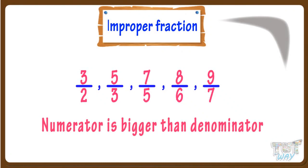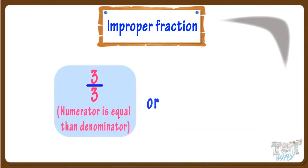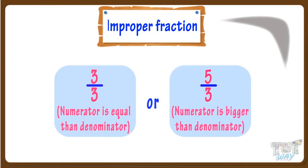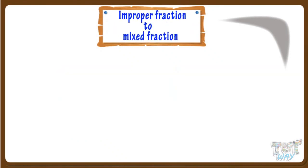So remember, in improper fractions, the numerator is either equal or bigger than the denominator. Any improper fraction can be converted to a mixed fraction by dividing the numerator by the denominator. Let's see how.